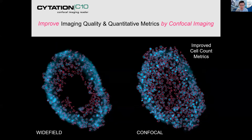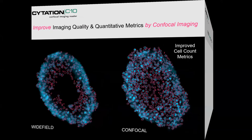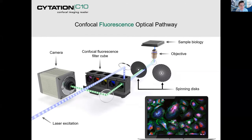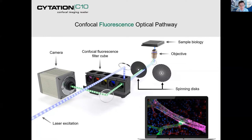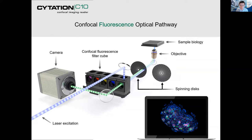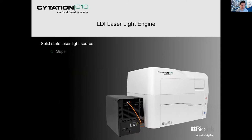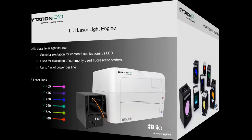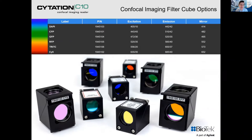The confocal fluorescence optical pathway: laser excitation moves through confocal fluorescent filter cubes, through the spinning disk technology to the sample, and emission light is received by the camera. The LDI laser light engine has six available laser lines — from 405 all the way through to 640 nm — each with a corresponding filter cube, covering options from DAPI all the way through to Cy5.